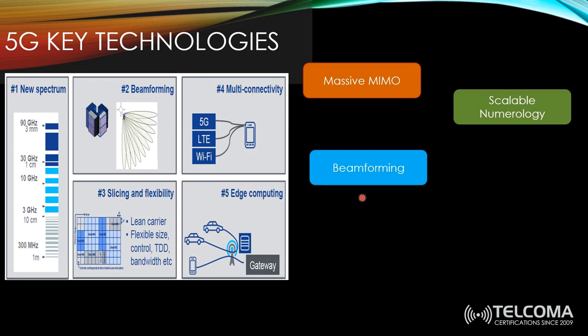Another technology is scalable numerology. Numerology is a new term never used in LTE, and those who work in LTE are not familiar with it. Numerology basically depends on changing the subcarrier spacing. In LTE, the subcarrier spacing is fixed at 15 kHz and cannot be changed. In 5G, we will have different numerologies: 15 kHz, 30 kHz, 60 kHz, and even 120 kHz — used at higher frequency layers.